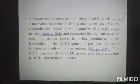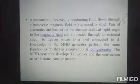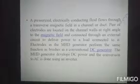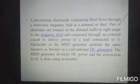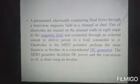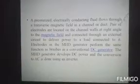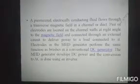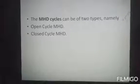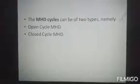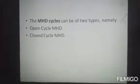The two electrodes in the MHD generator perform the same function as the brushes in a conventional DC generator. Thus the MHD generator develops DC power, and conventional conversion to AC is done using an inverter. The MHD cycle can be of two types: open cycle MHD and closed cycle MHD.